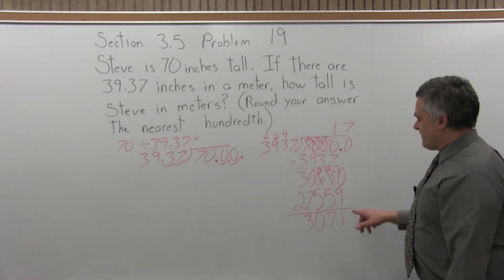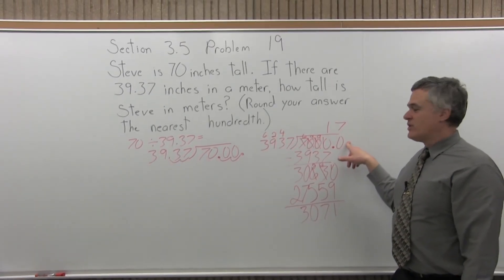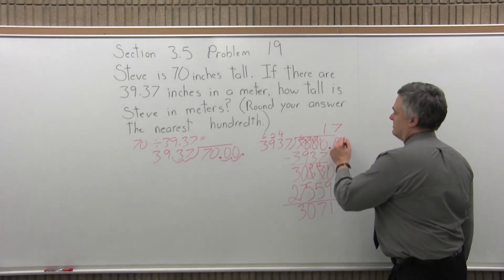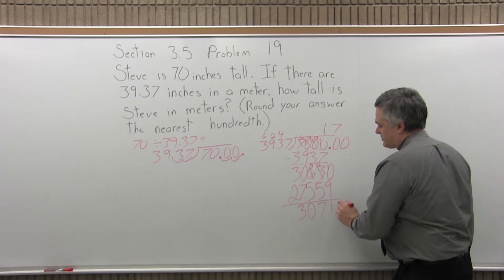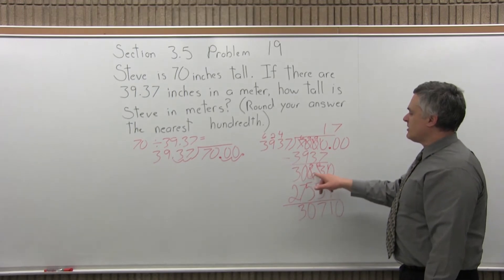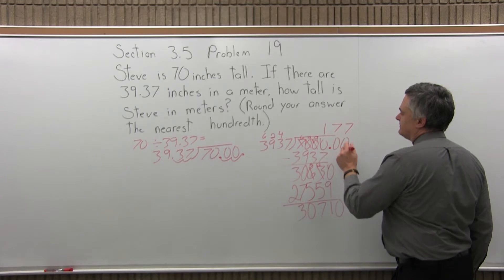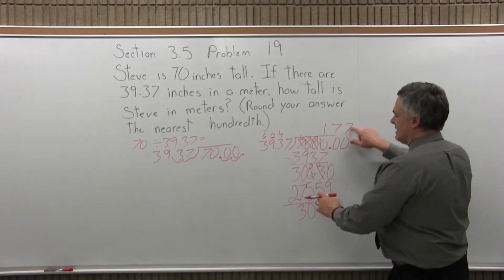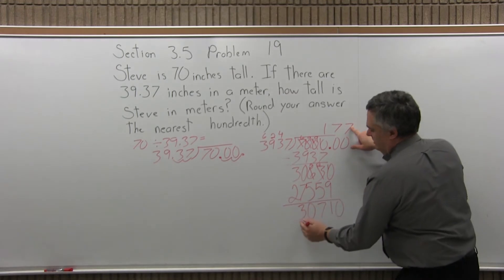So now I'm not done. It didn't fit in evenly. Again I have no digit further to the right to bring down, but I can just put in a 0. Again it's there really, we just don't bother to write it. So now I can bring that 0 straight down. And again I have something a little bit bigger than 30,000, not much. So 7 will work again, because for 30,600, 7 was good. So for 30,700, 7 is going to be good again. And since I already did the multiplication, I can figure it out again, but it's going to come out to the same number, 27,559.